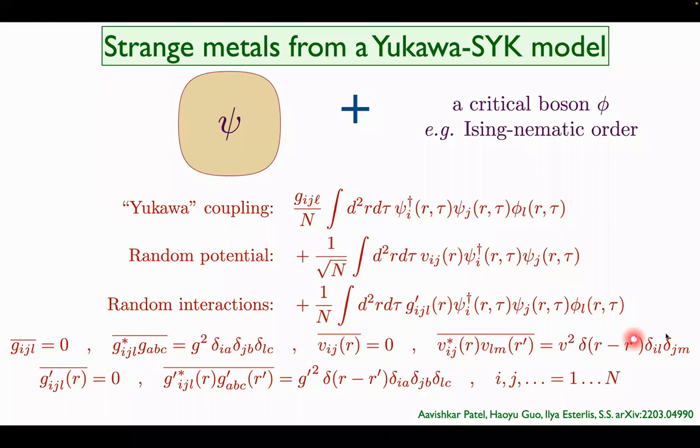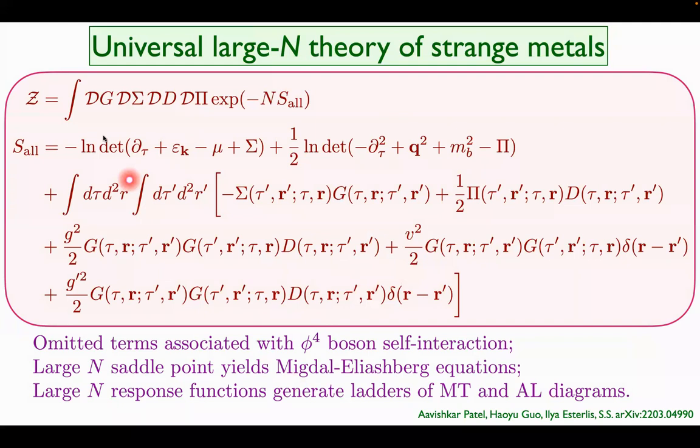Anyway, you take this theory and you average over all the couplings, average over this disorder, and take the large N limit. In fact, when you average over disorder, you'll get the universal theory. It's a path integral of a bi-local Green's function with a bi-local action. And here it is. The coupling constants are G squared, V squared, and G prime squared. And there's some dispersion, which you can take any form you want. And really, this is the theory you have to now work out.